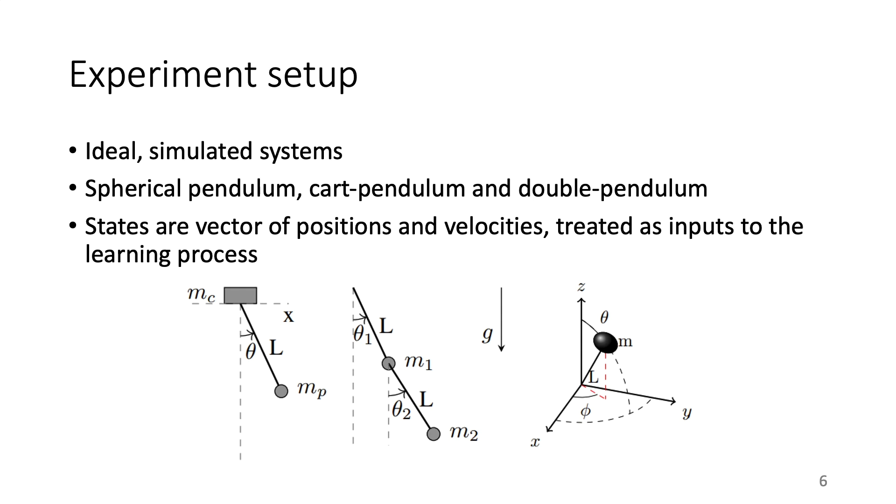We employ three idealized multi-DOF nonlinear systems as objects for experiments. They are cart pendulum system, double pendulum, and spherical pendulum, respectively. In all systems, the length of the rod is 1 meter, and gravitational acceleration is 9.8 meters per second square. The masses are all 1 kg except MP being 0.1 kg.